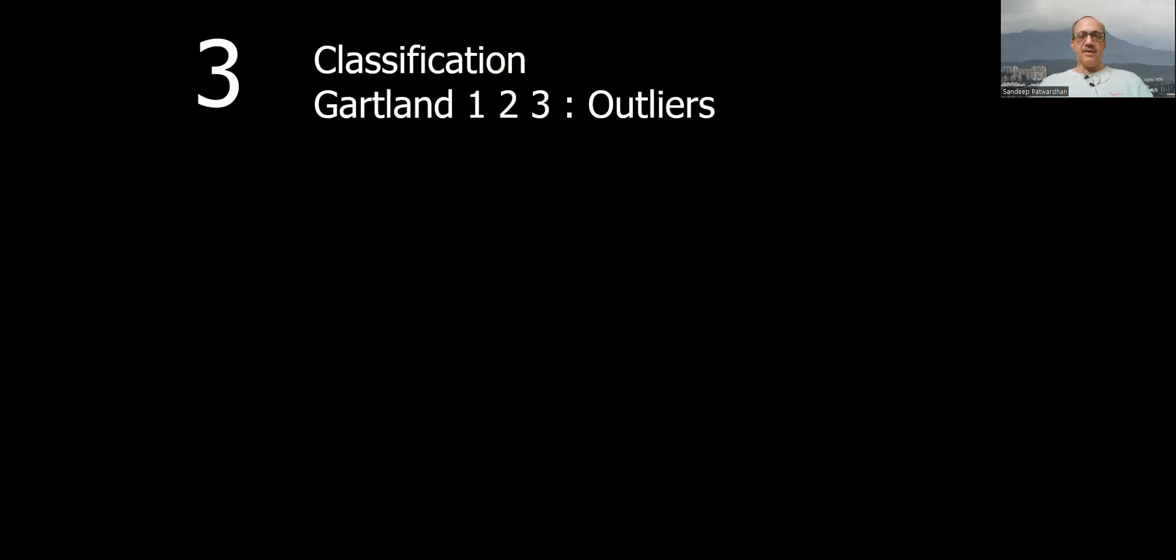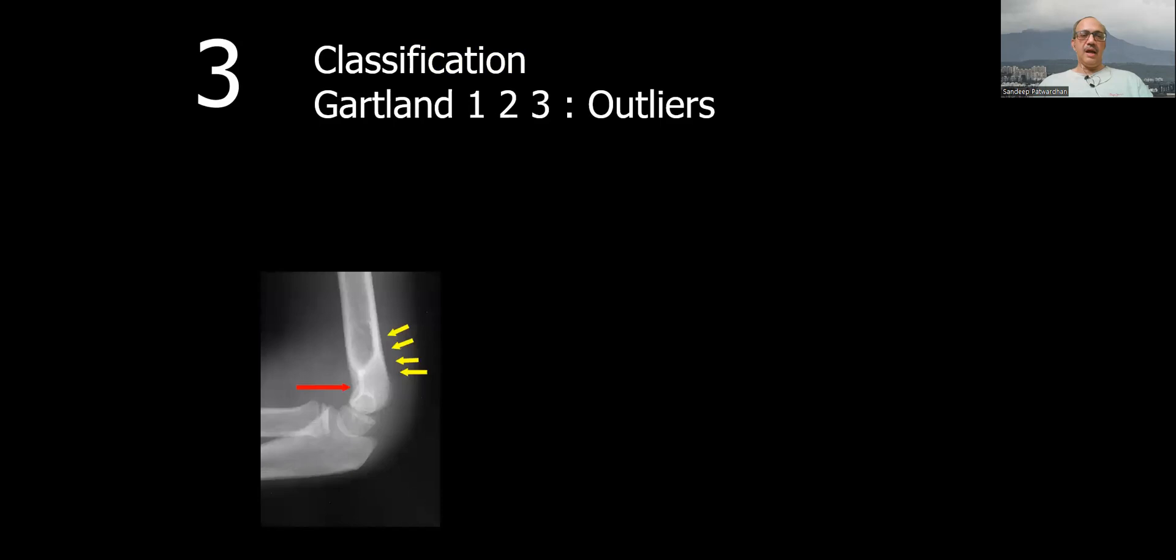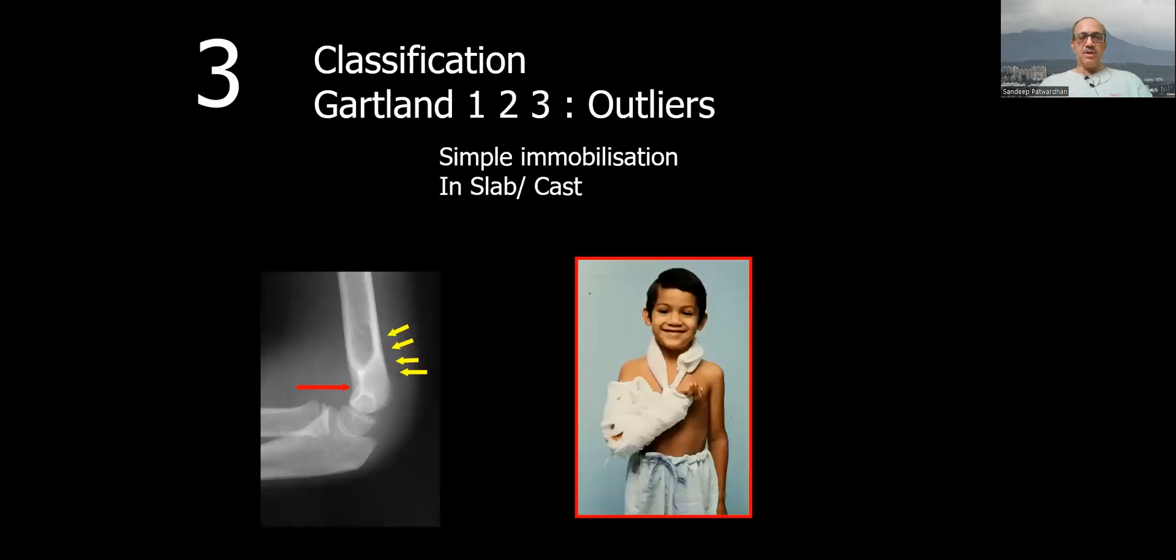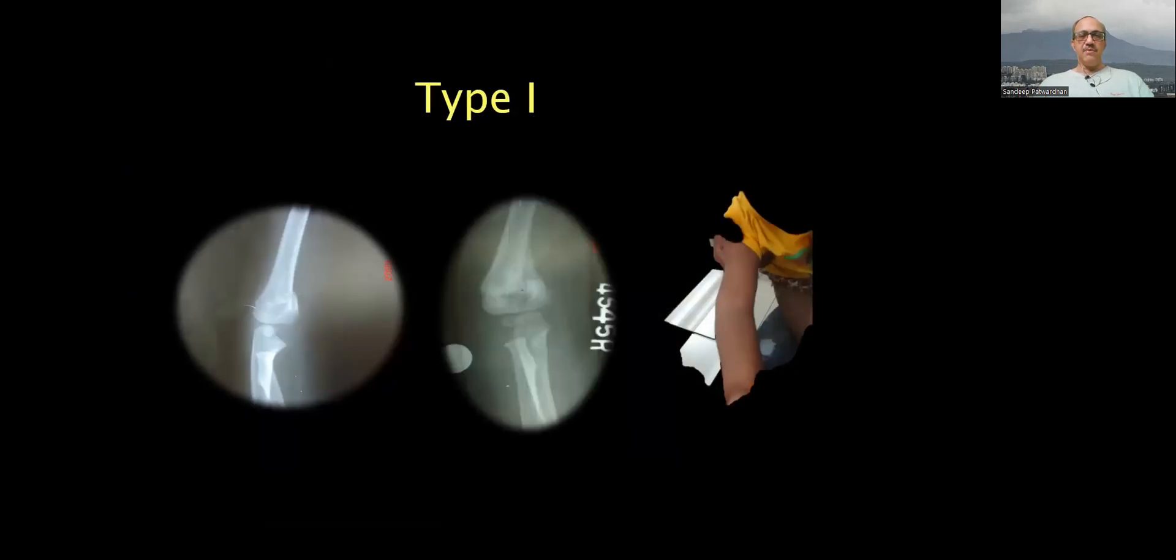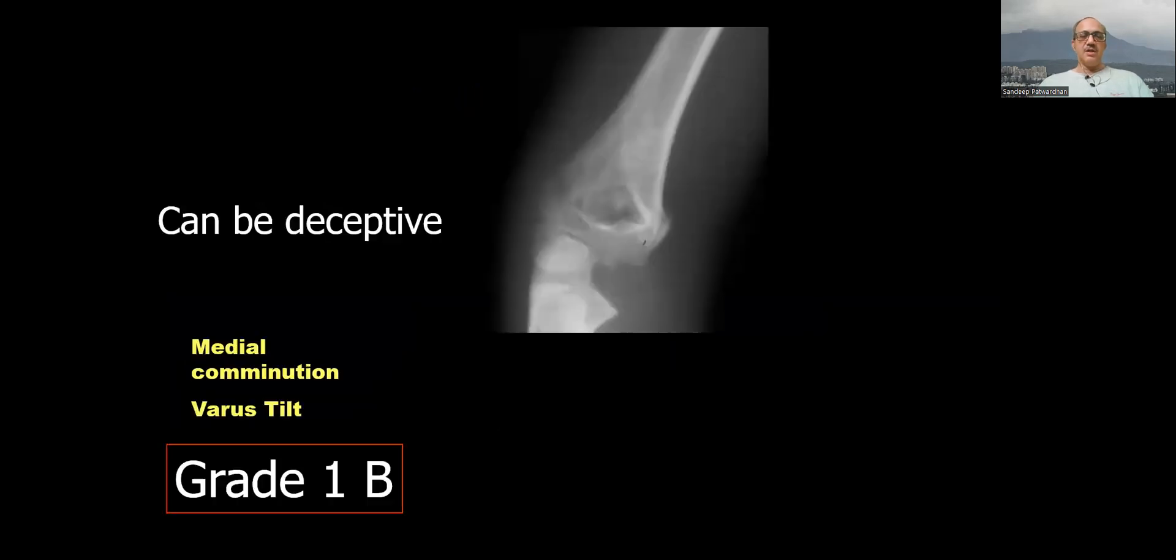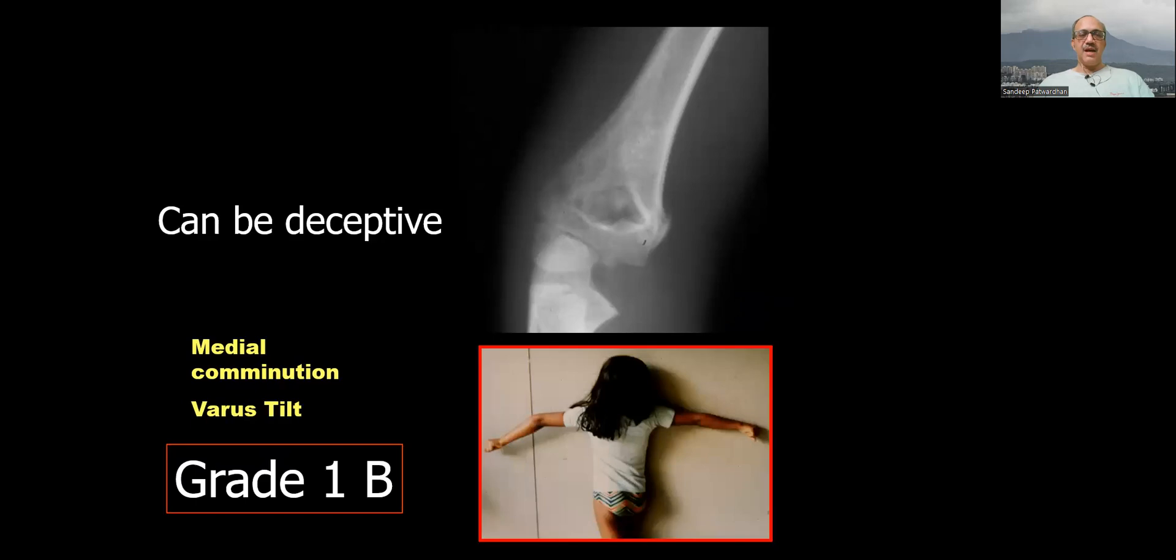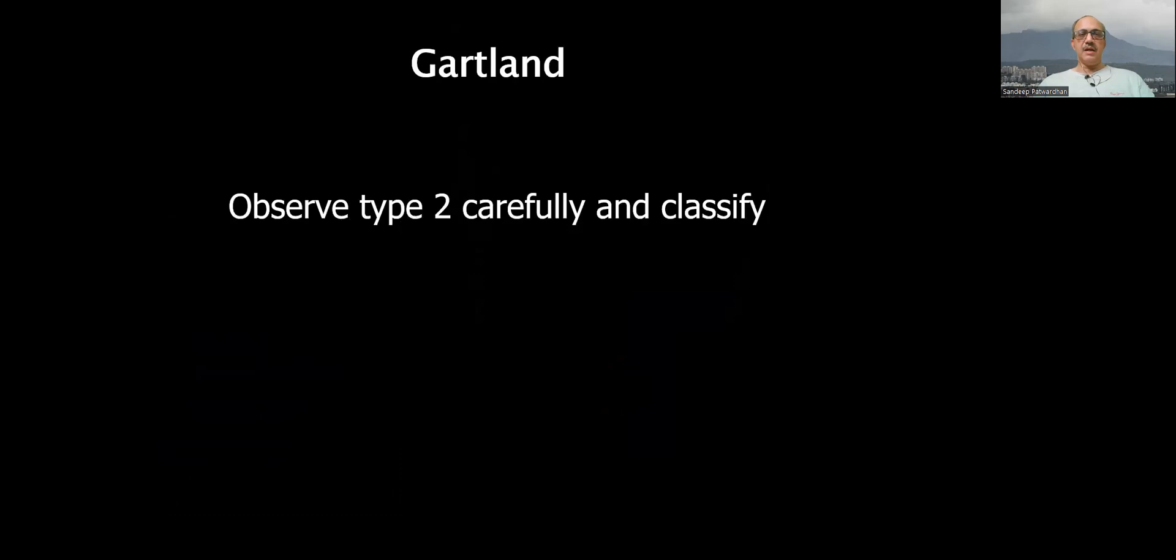The classification of Gartland everybody knows, but you should know the outliers. The type 1 injury which seems innocuous and can be treated in a slab - if there is medial comminution which is type 1b, you might end up with cubitus varus and are likely to be taken for litigation. So these are deceptive. Look for the varus tilt and medial comminution even in type 1 injuries and reduce them accurately.